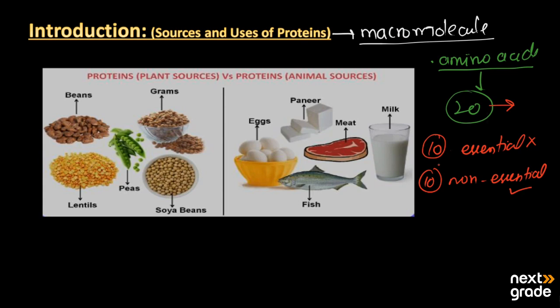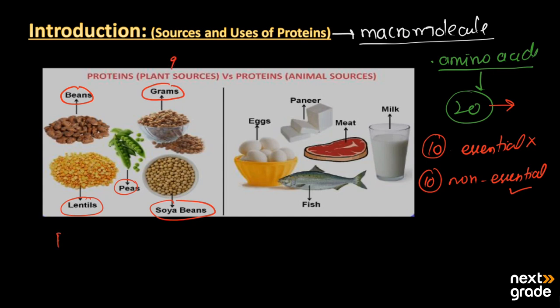For the plant sources of proteins, we have beans, grams, lentils, peas, and soya beans. All these are sources of proteins that we gain from plants, as all these are products of plants.